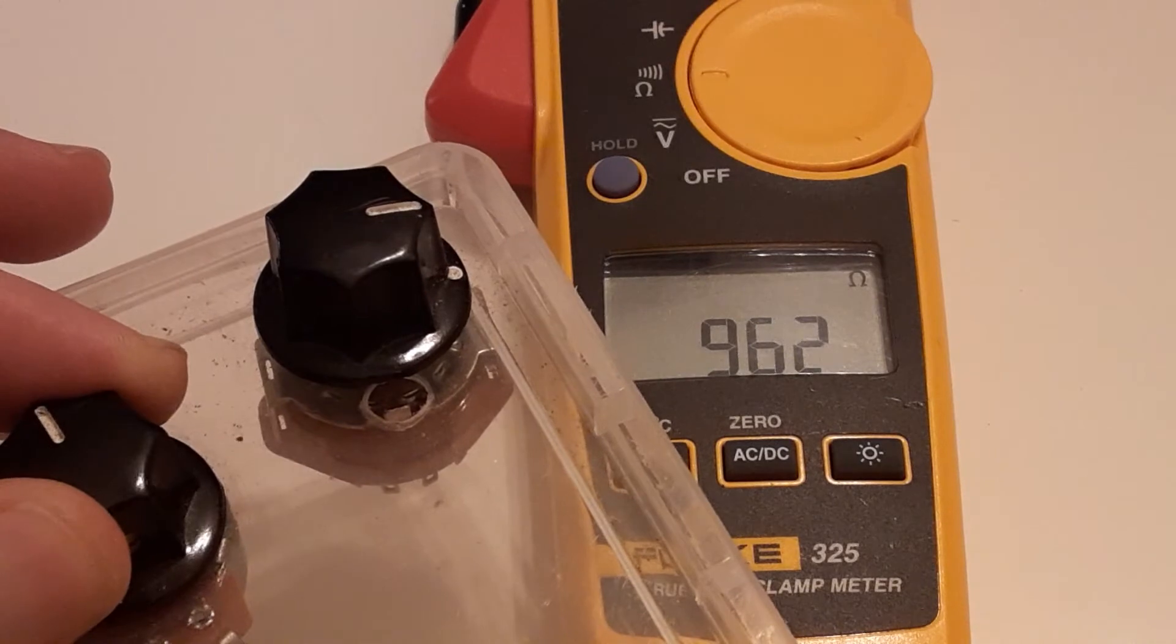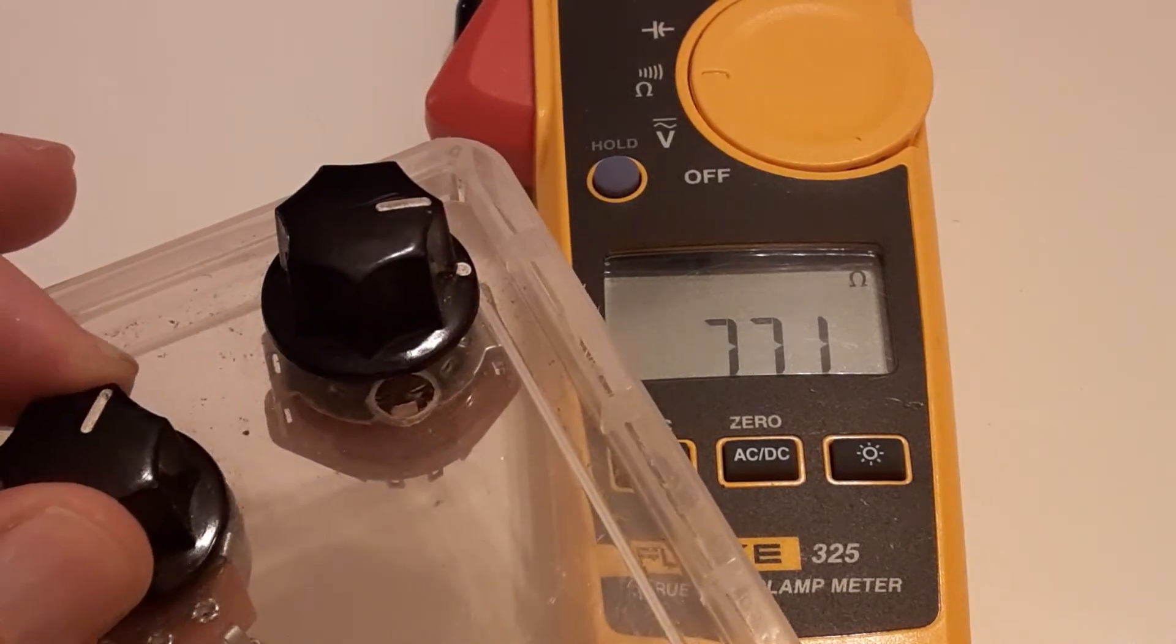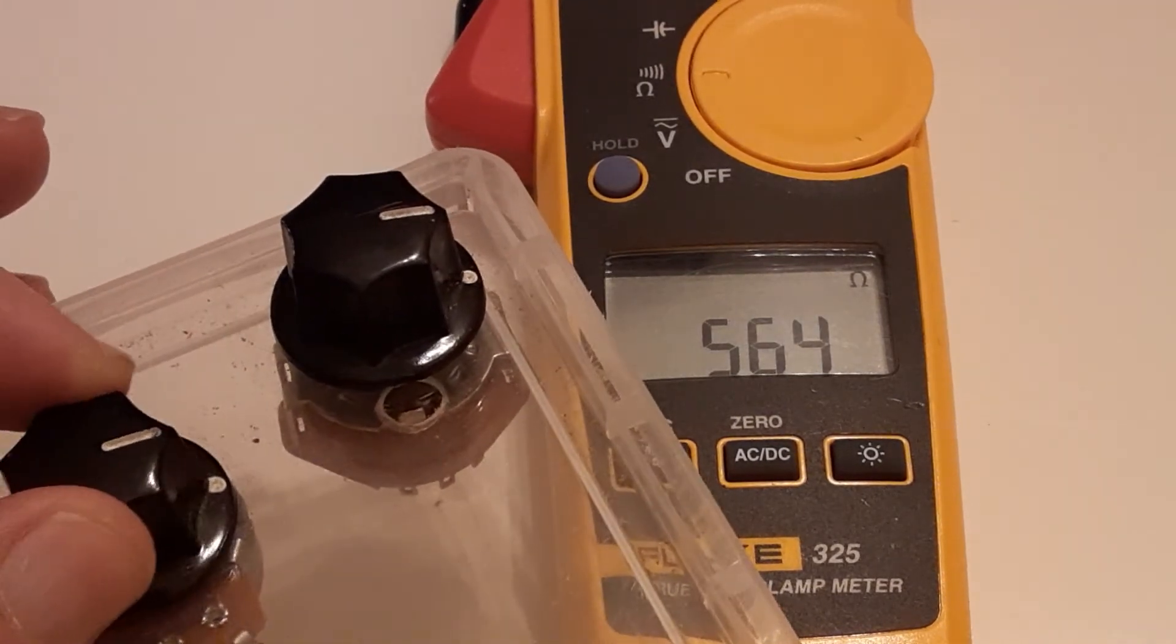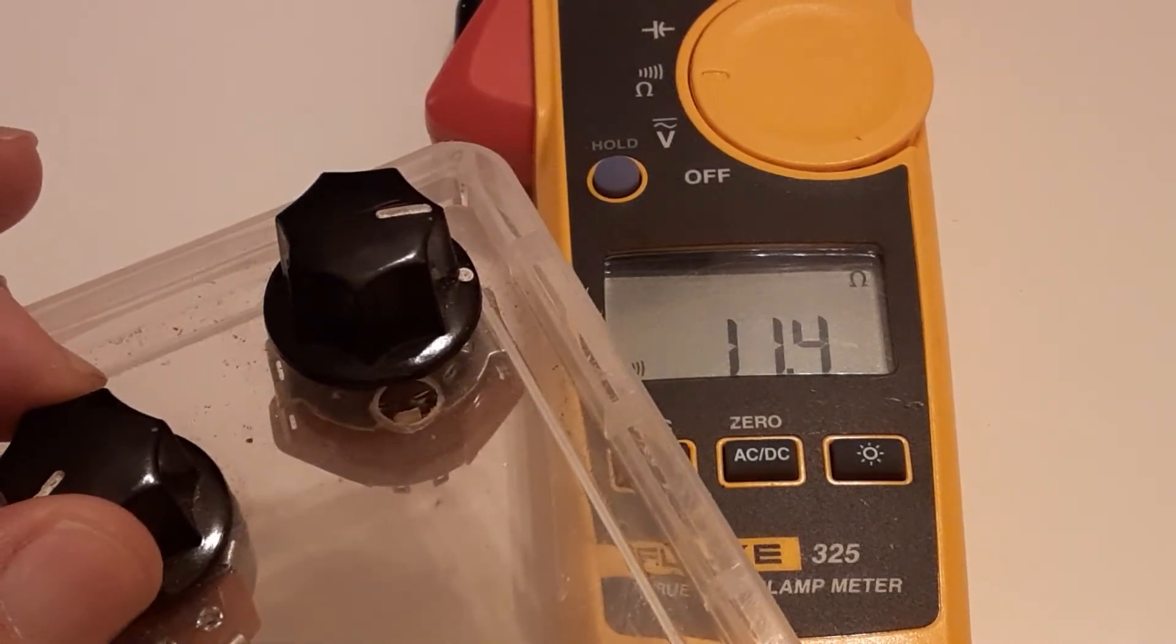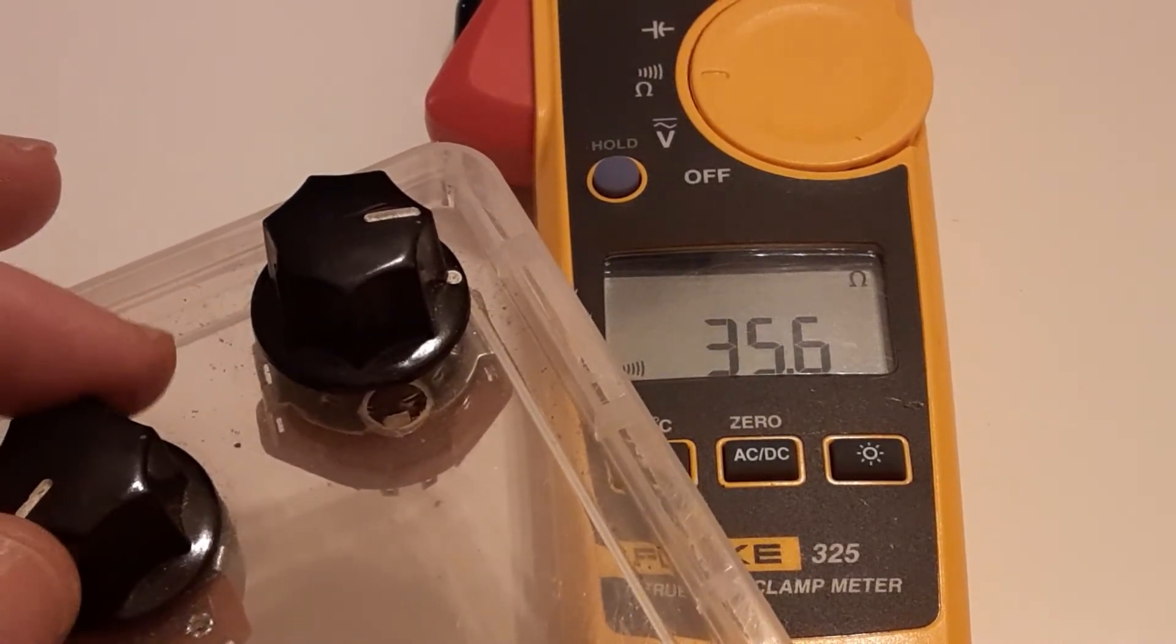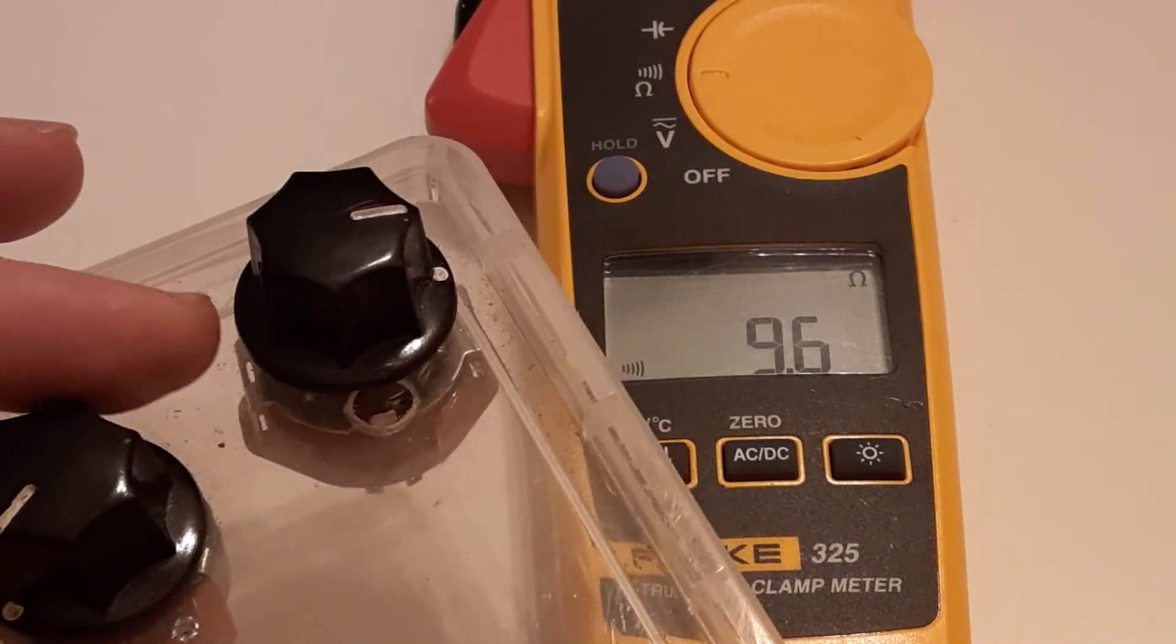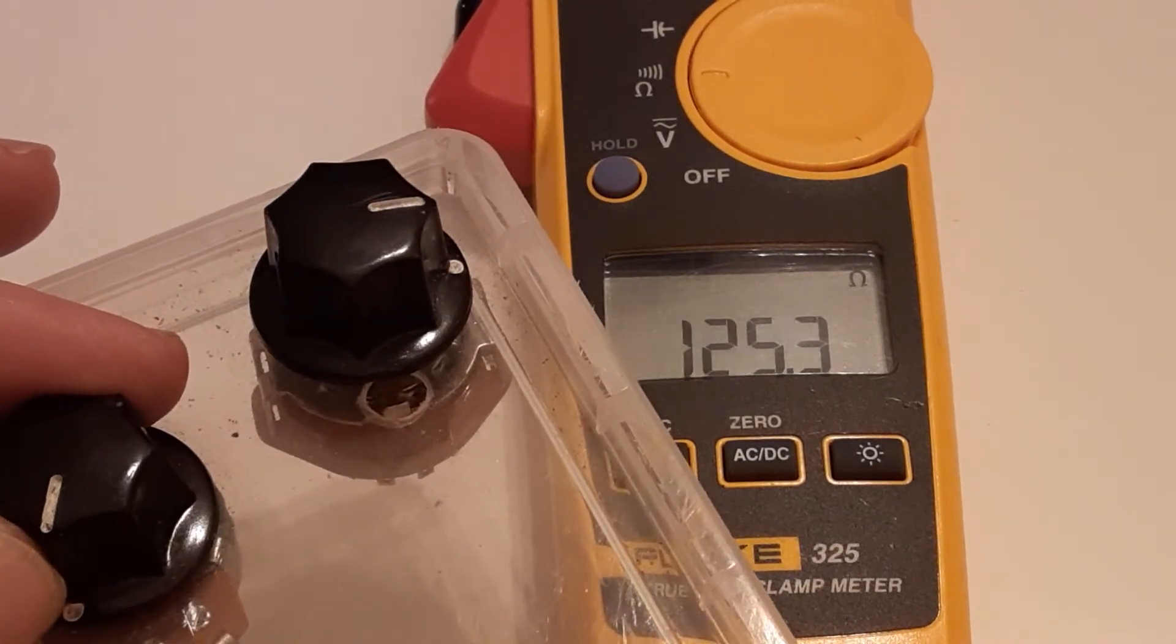So here's my pot. If I turn it, it's a variable resistance. It should go down to zero. Oh, there's continuity. Continuity kicked in and it won't stop beeping. So I'm going to back away from that.